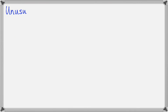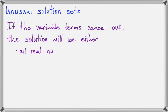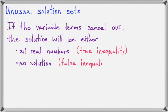Now let's look at some unusual solution sets. If you solve an inequality and the variable terms cancel out, it means that the solution is either all real numbers or no solution at all. We're going to look at an example of each.